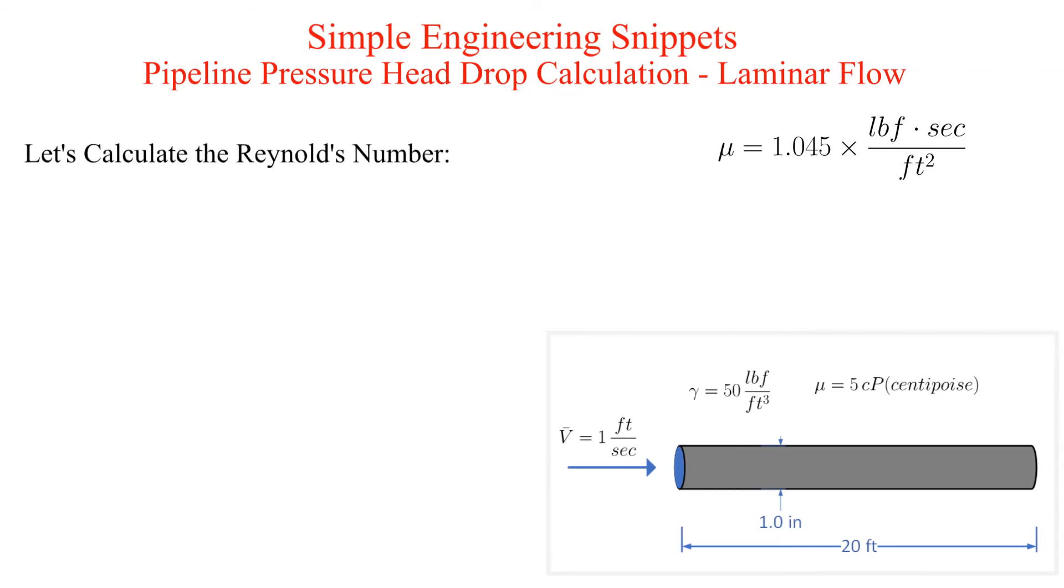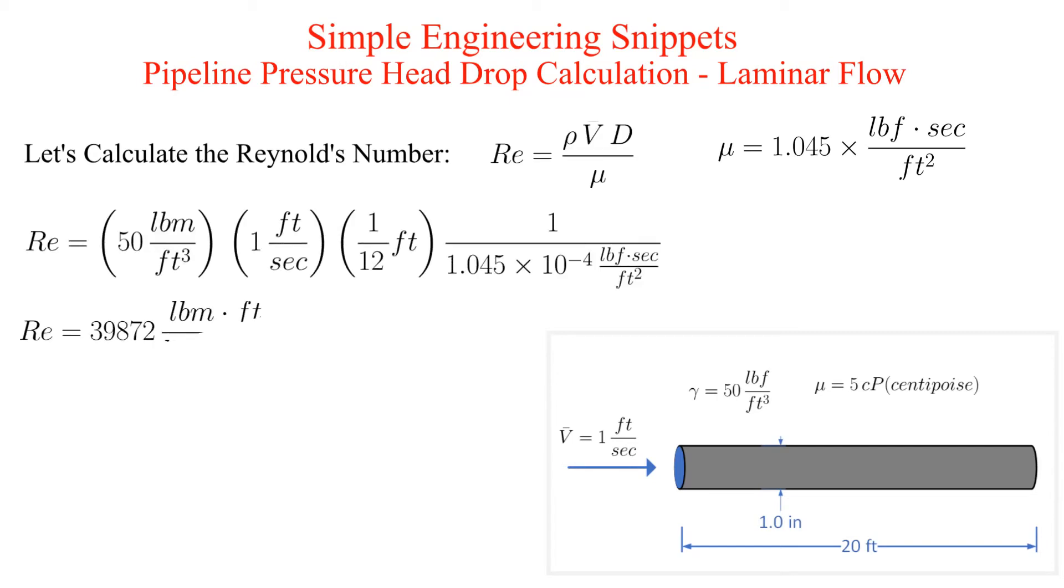Now we have everything to calculate the Reynolds number. The calculated value was 1238, which is well below the value where we have to worry about transiting to turbulent flow. We will treat the flow as laminar.